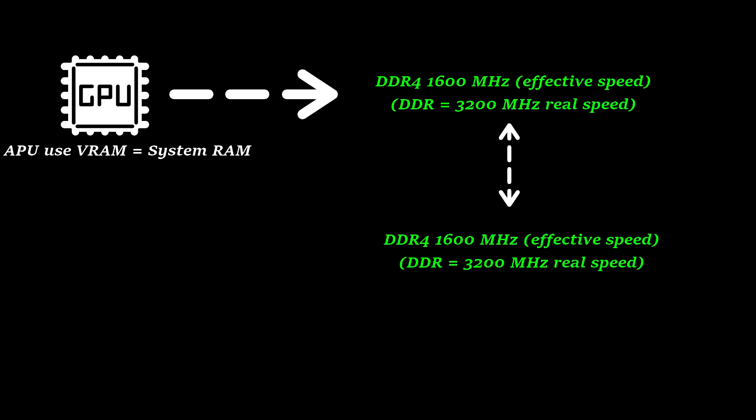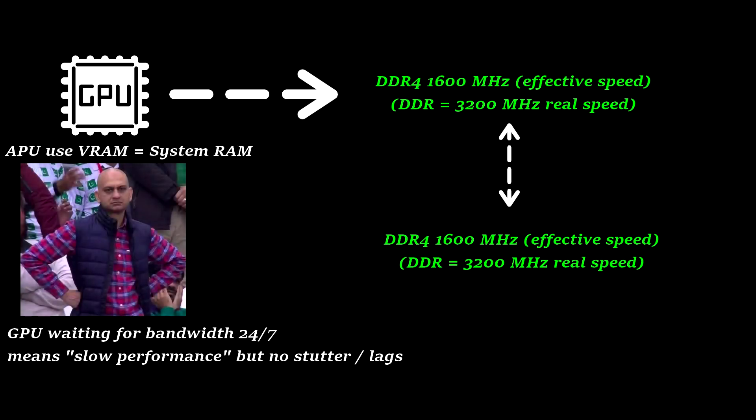Now we want to see how this works with our APU. Since an APU uses system RAM as VRAM, both have the same speed. Even when our VRAM is full, it does not impact the performance, since the delay from VRAM to system RAM is equal — it is the same RAM. This leads to a worse overall performance, but you won't have stutter or bad frame times when the virtual VRAM is full.